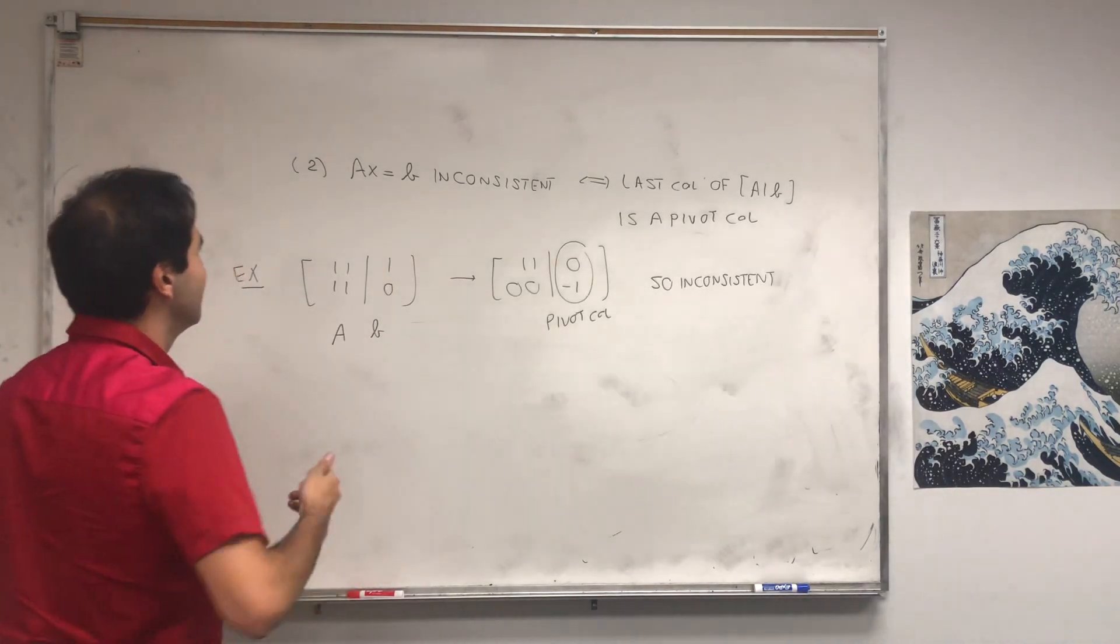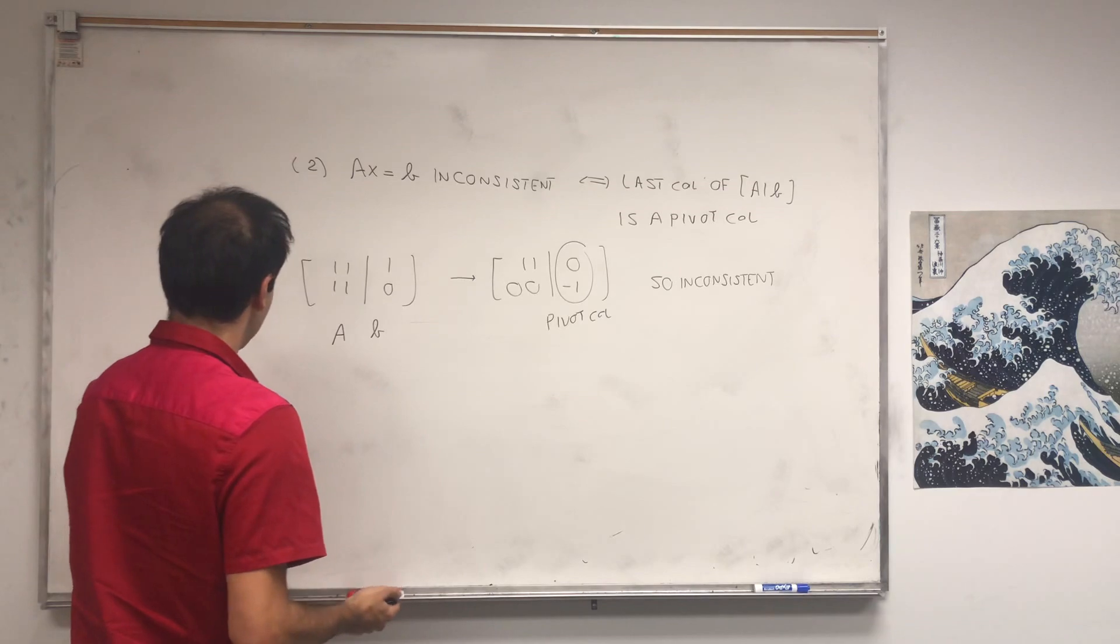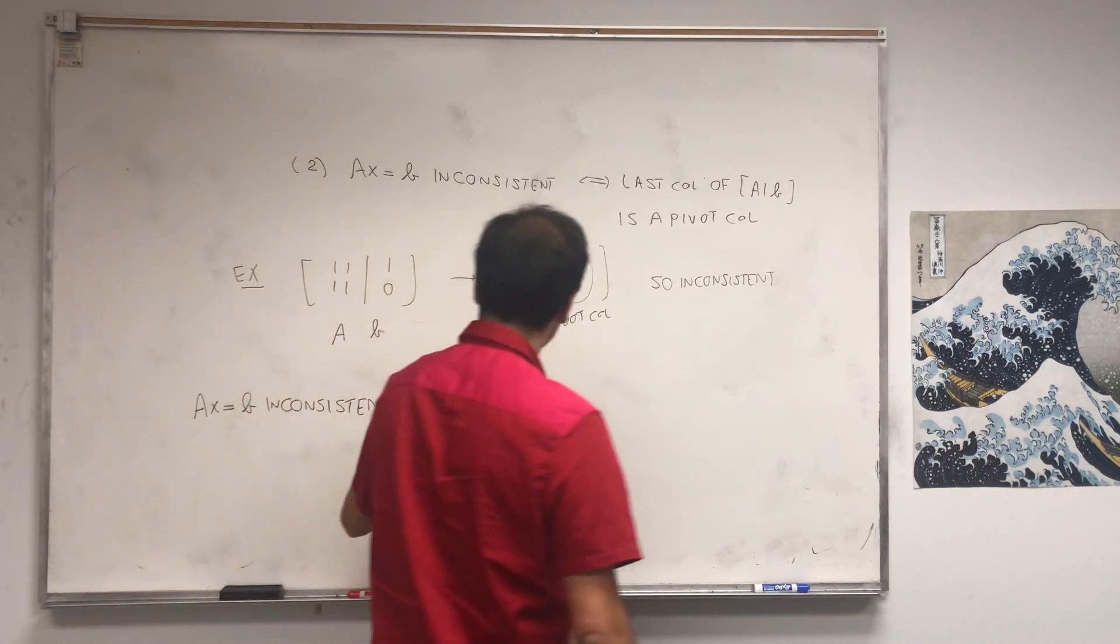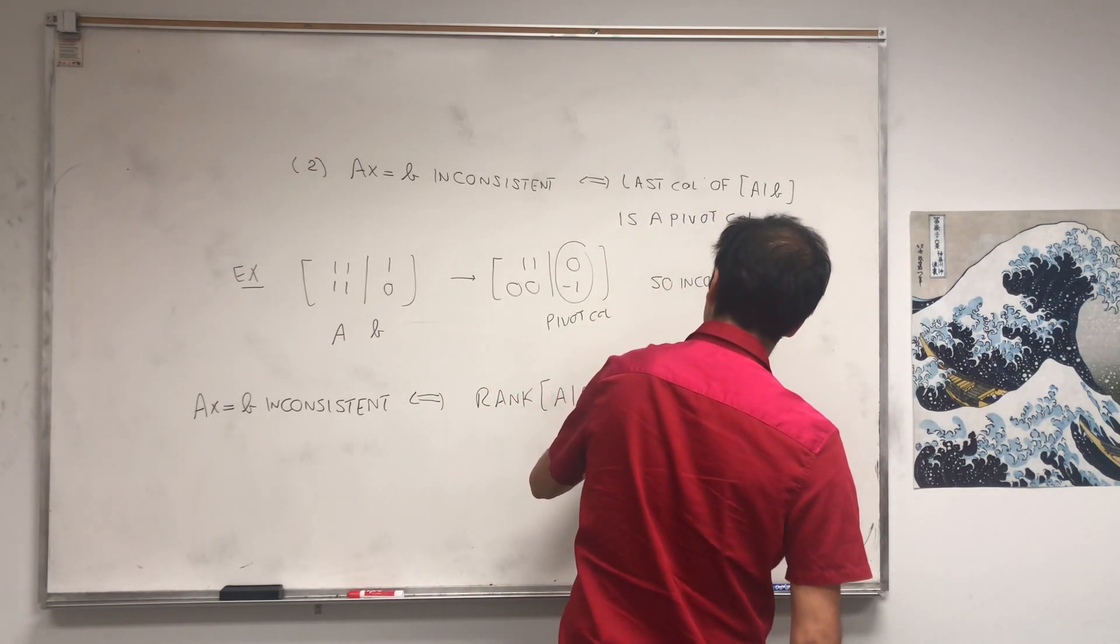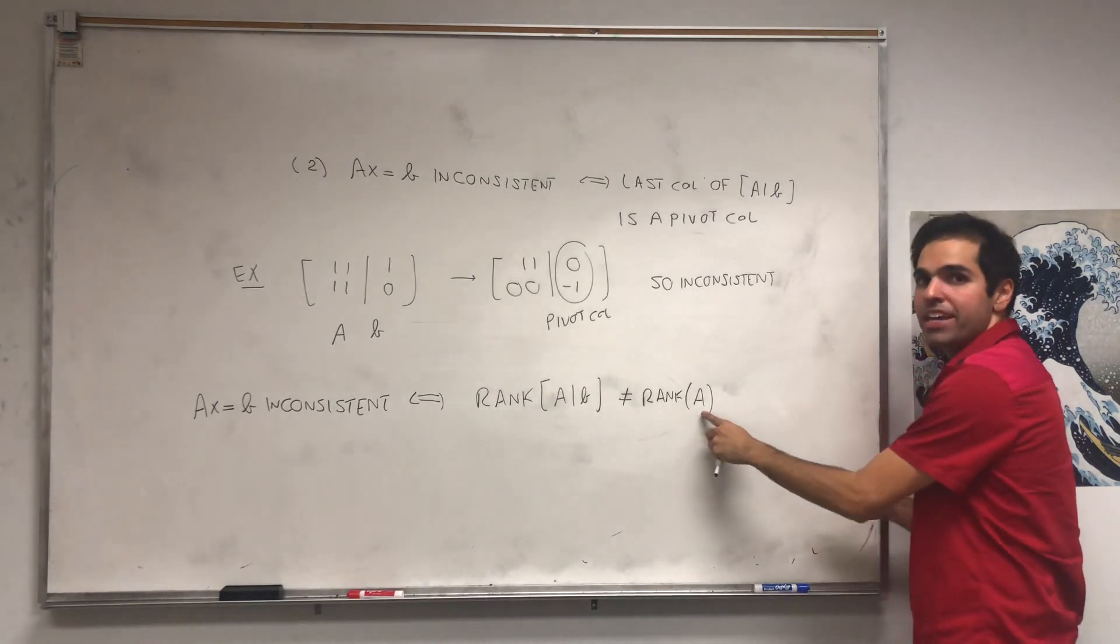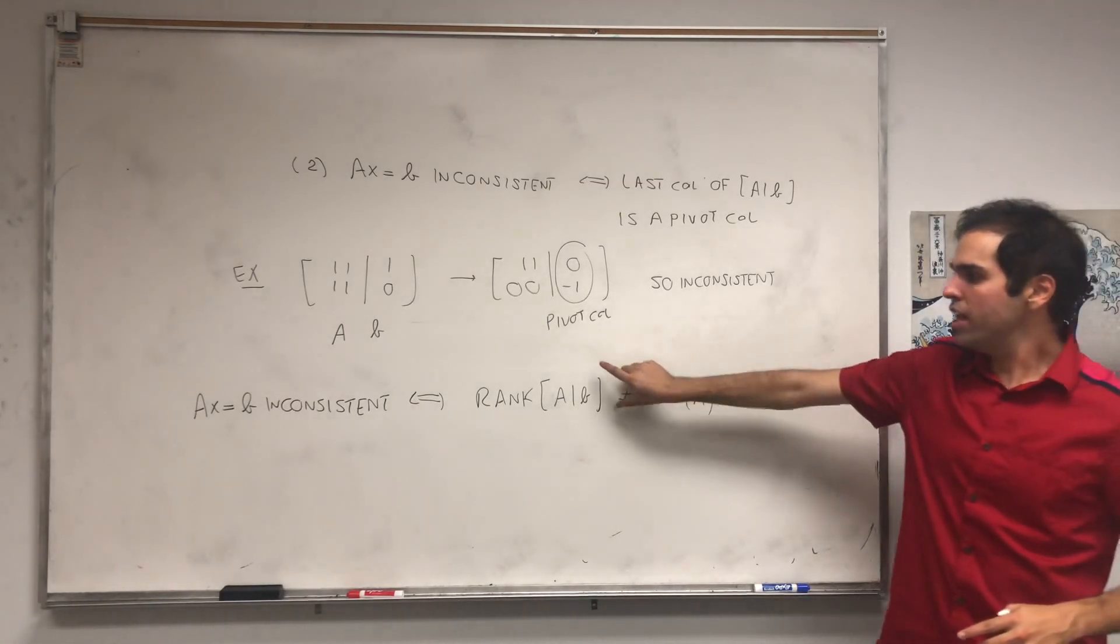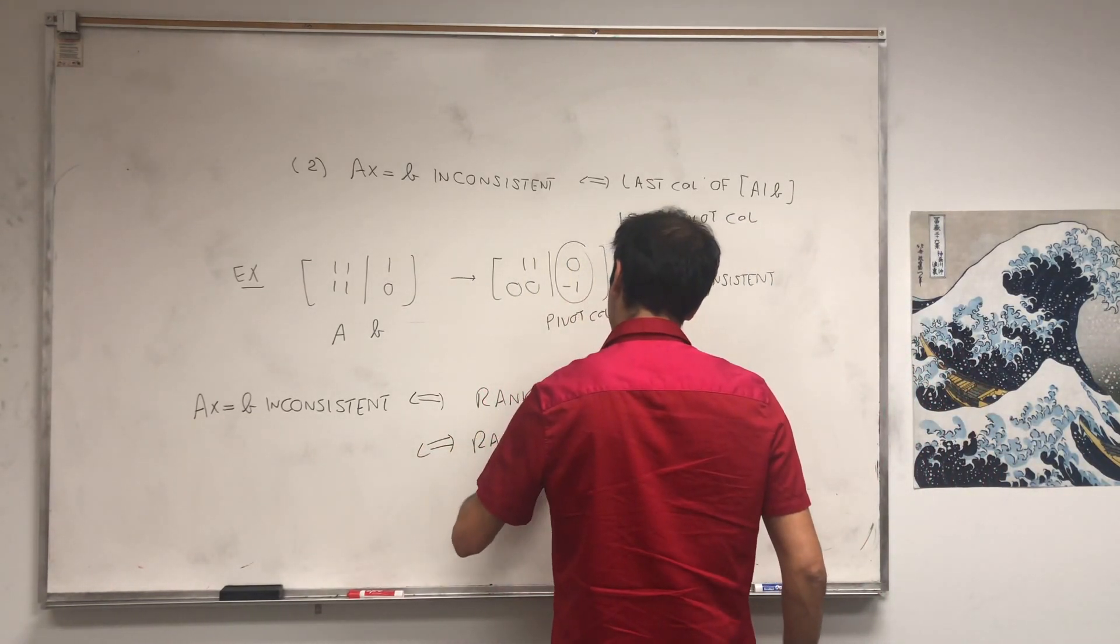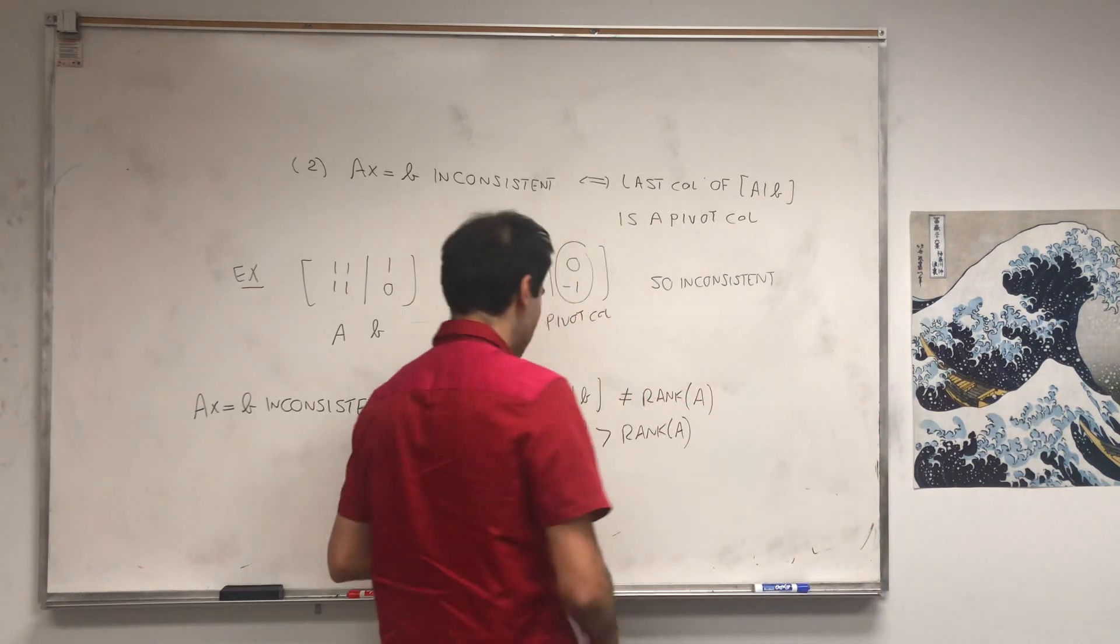And I'm improvising a little bit because I didn't have that on my notes. But look, AX equals B inconsistent. Well, that's equivalent by the rank criteria that the rank of [A|B] is not equal to the rank of A. But look, this matrix is bigger than this matrix, or this matrix is kind of included in this matrix. So if the ranks are not equal, it means this is strictly bigger than this one. That's equivalent to the rank of [A|B] is strictly bigger than the rank of A.